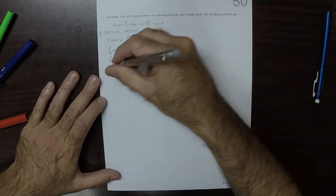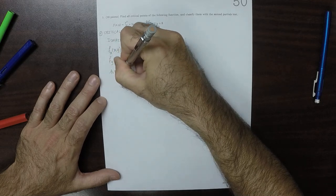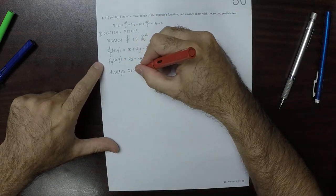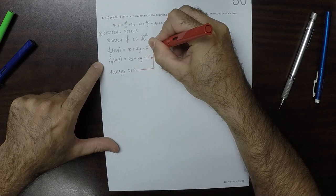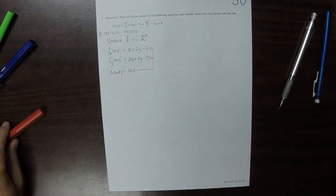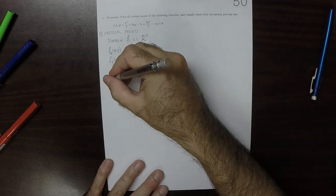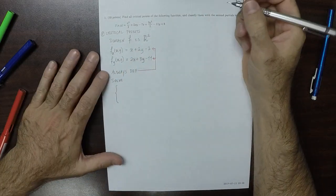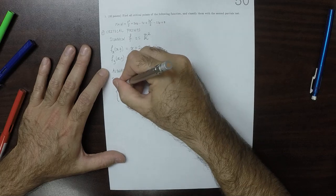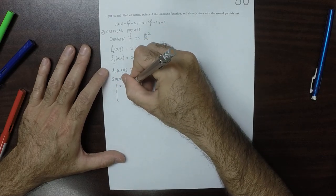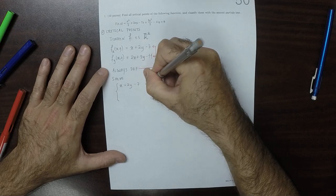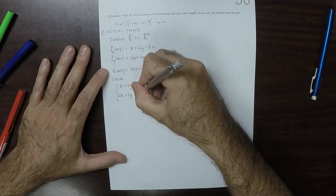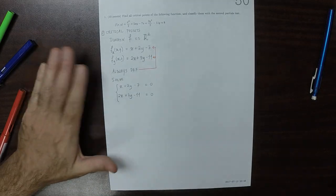These are always defined, so we don't need to worry about any non-smooth critical points. All the critical points will be smooth. What we want to do is solve the equation: both partials equal to 0. Solve the system of equations. So x plus 2y minus 7 equal to 0, and also 2x plus 3y minus 11 equal to 0. We want to solve both of these simultaneously.